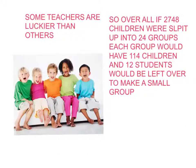So overall, if 2,748 children were split up into 24 groups, each group would have 114 children, and 12 students would be left over to make a small group.